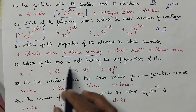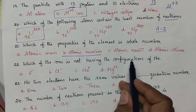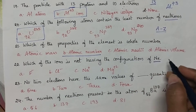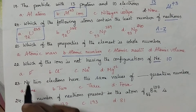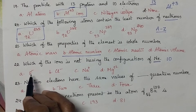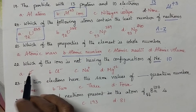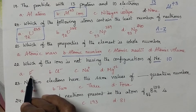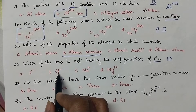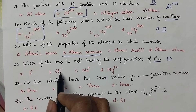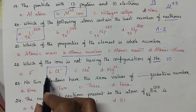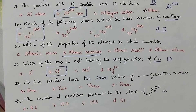Which of the ions is not having the configuration of neon? The atomic number of neon is 10. Coming to the first option, it is fluoride ion — fluorine atomic number is 9, and if it is F minus, 10 electrons are present. Coming to the second option, it is chloride: 17 plus 1, 18 electrons are present. So chloride ion is not having the configuration of neon.